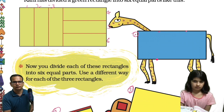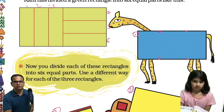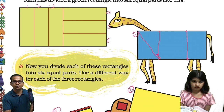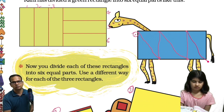I'd like to see what Avisha has drawn. Divide into three parts and each part you divide it into two — it will become six parts, six equal parts.